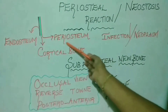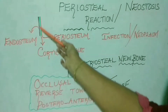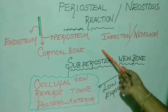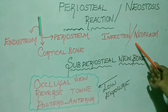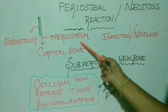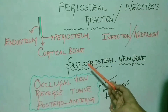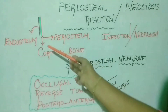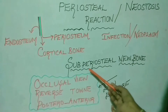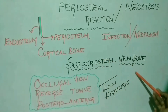The periosteum can be lifted up or elevated from the surface of cortical bone because of irritation from inflammatory or neoplastic processes. This irritated and lifted periosteum can lay down new bone just beneath it. This new bone deposited just beneath the periosteum is called subperiosteal new bone.